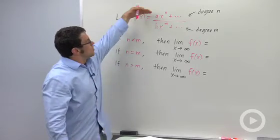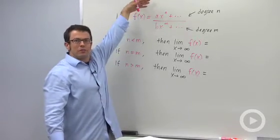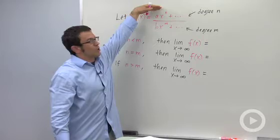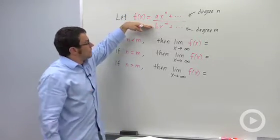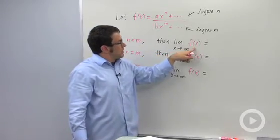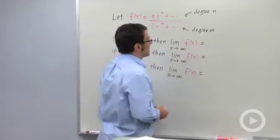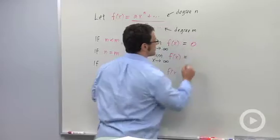Now if the degree of the numerator is smaller, for example, the numerator is a quadratic, degree 2, and the denominator is a cubic, degree 3, then the limit as x approaches infinity of f of x is always going to be 0. Always.